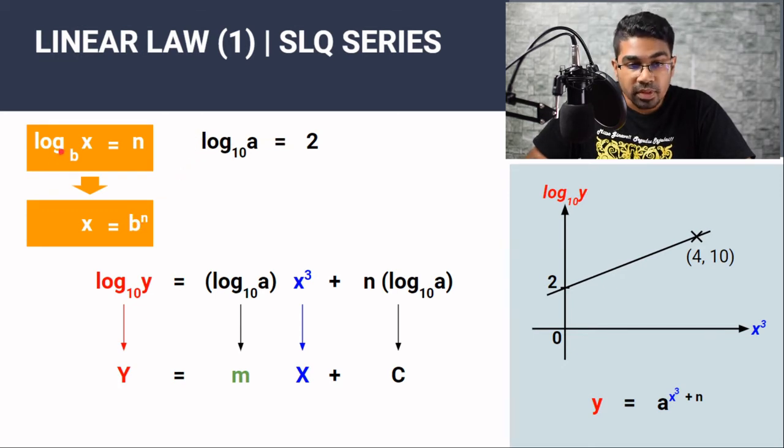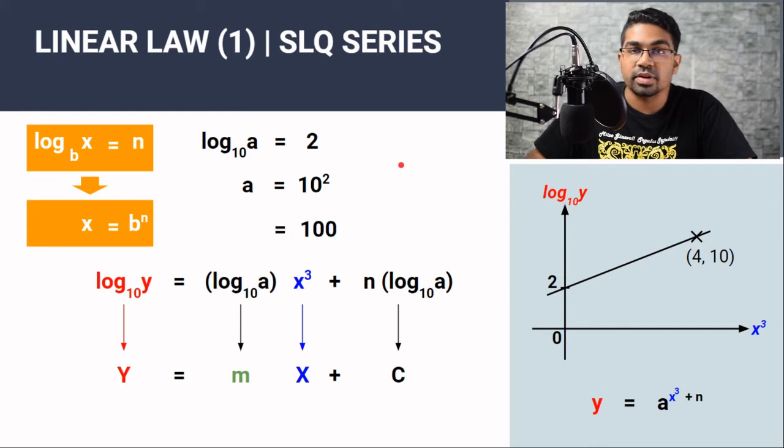By comparison here, b will be 10, x will be a, and n will be 2. So when we convert this log form to index form, this is what we will get. A equals 10 to the power of 2. Here, a, which is x, will equal the base which is 10, to the power of 2. And this will give us 100. So we found the value of a. A equals 100.